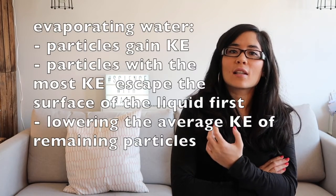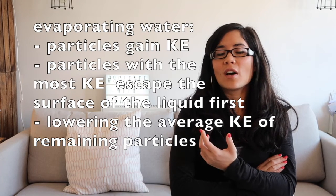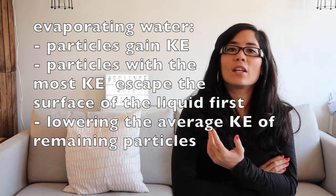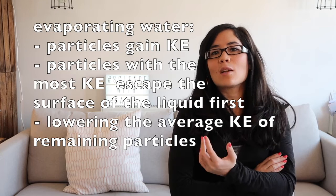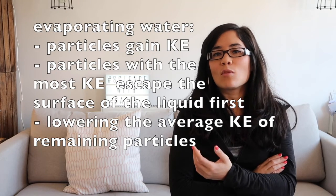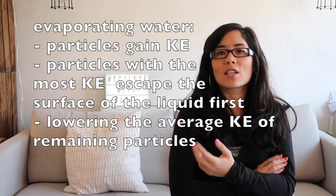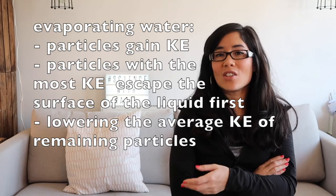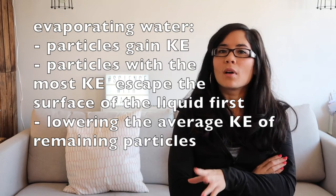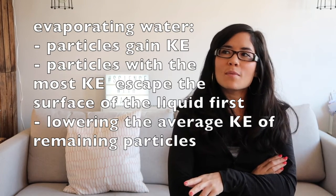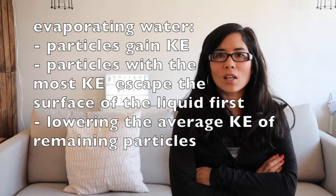They may ask you about how puddles evaporate on a hot day or how water boils. You're going to say that the particles gain kinetic energy, and those particles which gain the most kinetic energy will escape first — they'll escape from the surface of the liquid. And because they've escaped, the remaining particles have lower average kinetic energy. That's the sort of answer you need to rote learn; I've seen it come up lots of times.